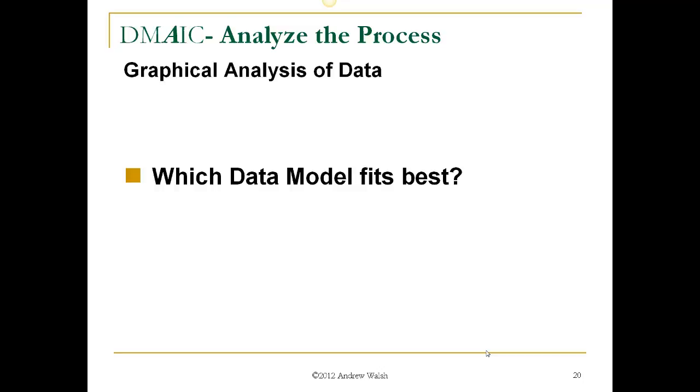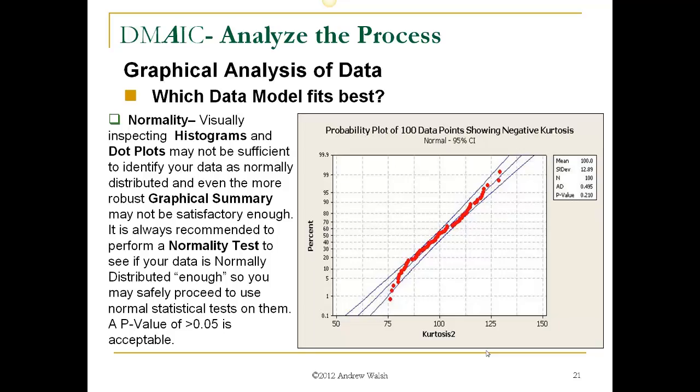So, which data model fits our data best? We can look at the normality, and we can visually inspect histograms and dot plots may not be really sufficient to identify your data as normally distributed. And even the more robust graphical summary may not be satisfactory enough. So, it is always recommended to perform a normality test to see if your data is normally distributed enough so that you may safely proceed to use normal statistical tests on them. A p-value of greater than .05 is acceptable. The p-value here is greater than .05, .210, so these data may be treated as normal and the typical tests may be applied to it with confidence.